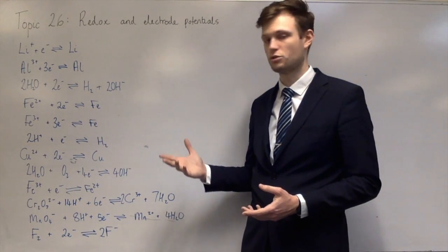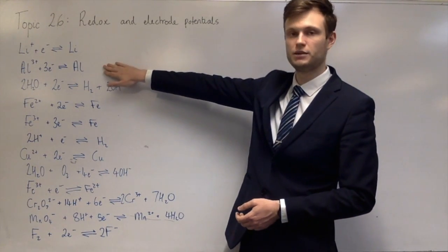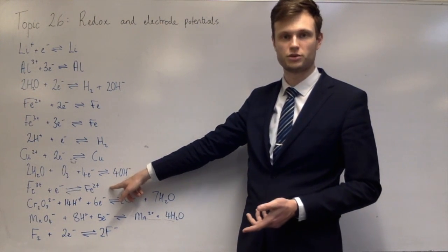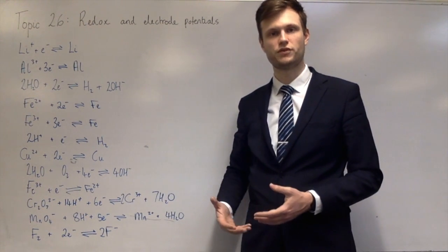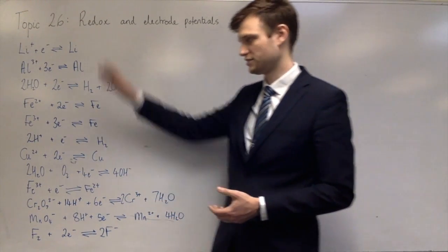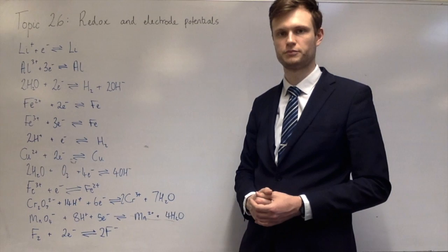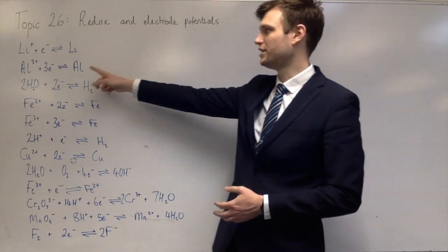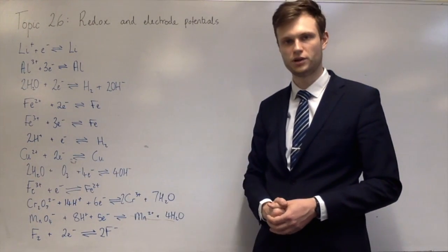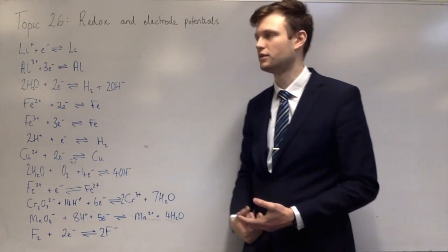I'm going to pick two at random and make a full redox equation. I'll use aluminium 3+ gaining 3 electrons, and iron 3+ gaining 1 electron to become iron 2+. The first thing you have to decide is which one is going to be reduced and which is going to be oxidised. The one which is going to be reduced is the one further down, so that's iron 3+ being reduced to iron 2+. Therefore aluminium is going to become aluminium 3+.